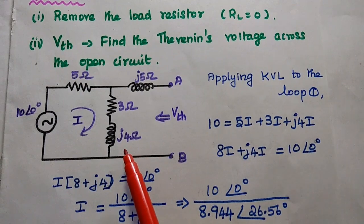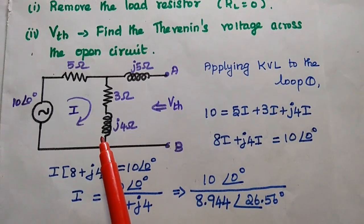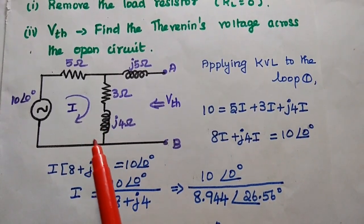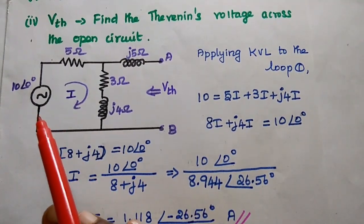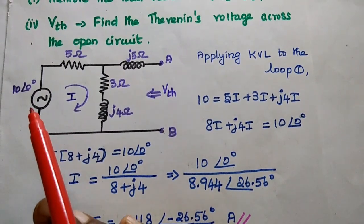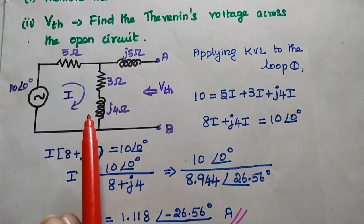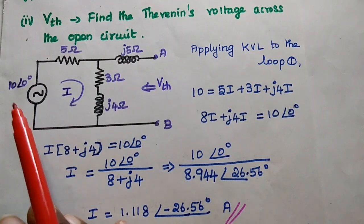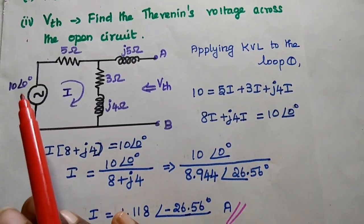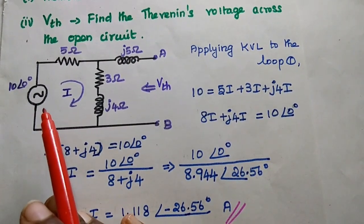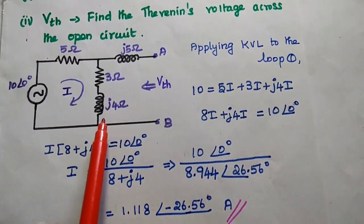We are going to find out the voltage drop across this branch, and for that we need the current flowing through this branch. We can apply Kirchhoff's Voltage Law in this first loop. Kirchhoff's Voltage Law states that the sum of voltage rises is equal to the sum of voltage drops in the closed loop. The voltage rise is the voltage source 10 with angle 0 degree. The voltage drops are across the 5 Ohm, 3 Ohm, and J4 Ohm.